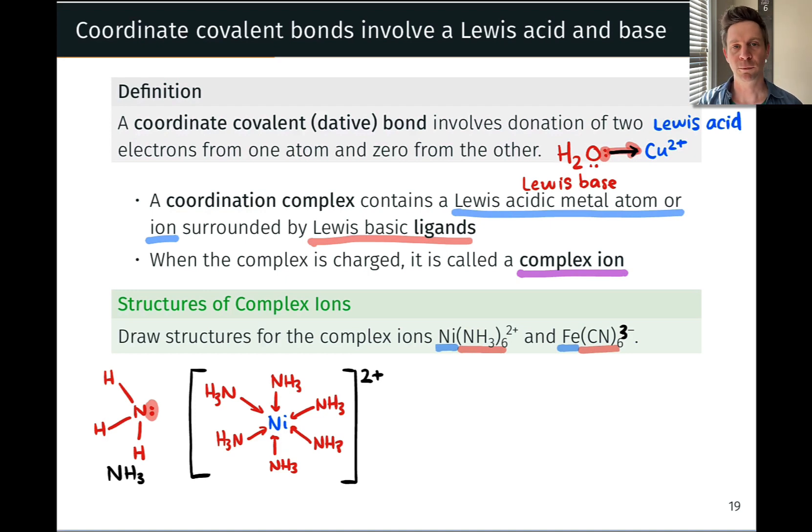And to represent the coordinate covalent bonds, we can either use lines or arrows from the Lewis base to the Lewis acid like this. You'll also commonly just see these drawn as just lines without the arrow. But since we just introduced this idea of the dative bond up here, I wanted to use arrows to show these bonds. And I'll commonly do that as I'm drawing coordinate covalent bonds throughout this unit. And this is it. We've drawn the structure.